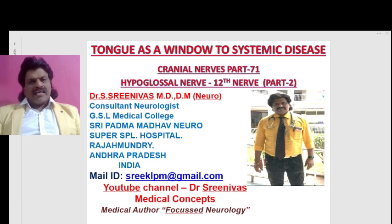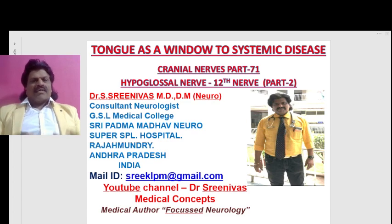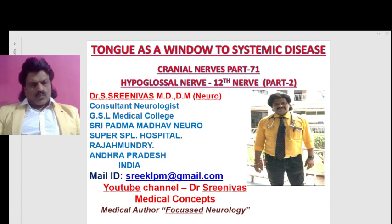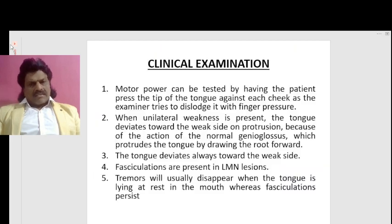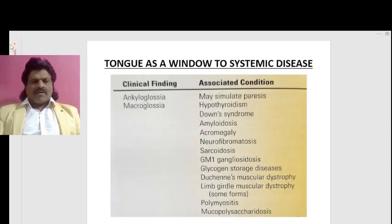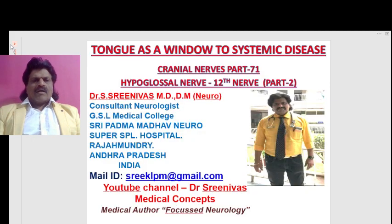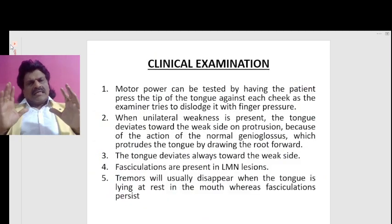Today we're going to talk about a very interesting topic: the tongue as a window to systemic disease — cranial nerves part 71, hypoglossal nerve, 12th nerve, part 2.